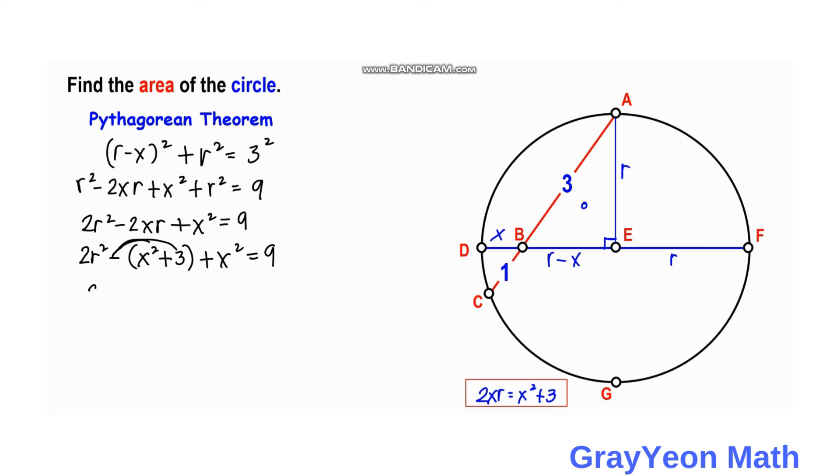Distributing the negative, we have 2R squared minus X squared minus 3 plus X squared equals 9. We can cancel the negative X squared and positive X squared, leaving 2R squared minus 3 equals 9.